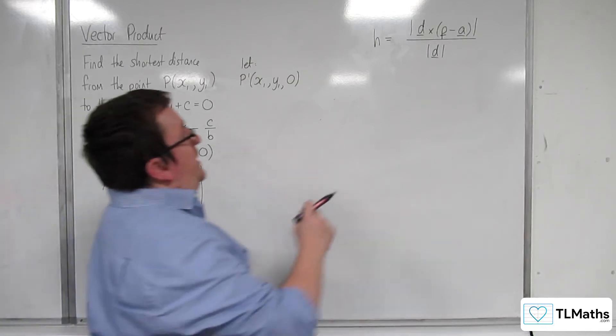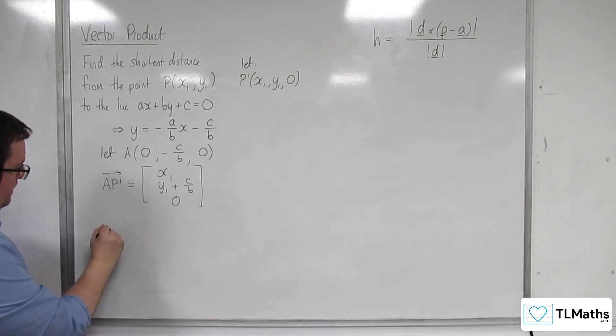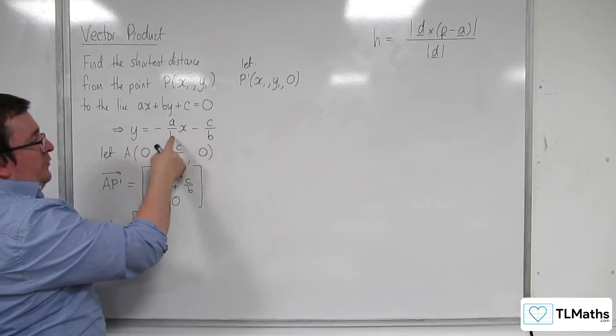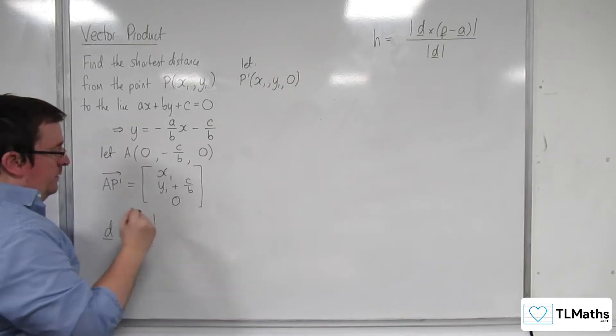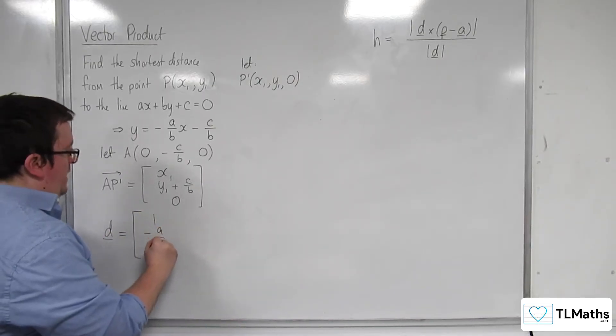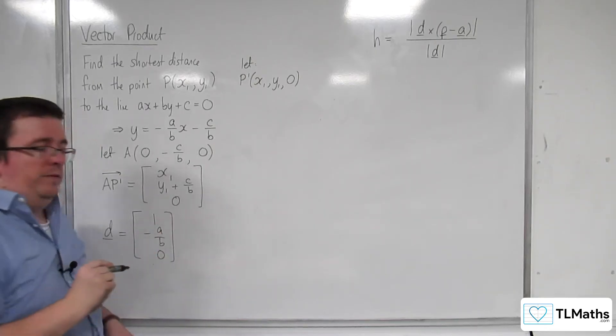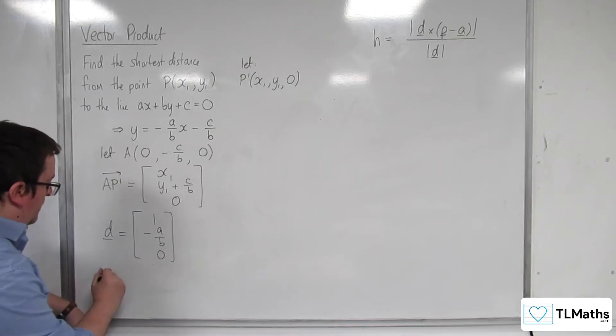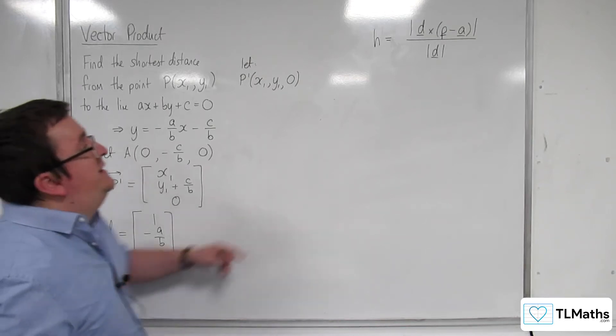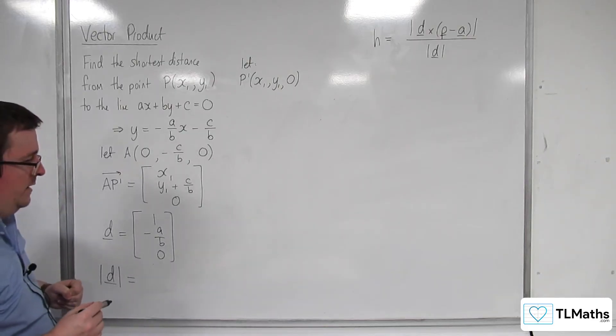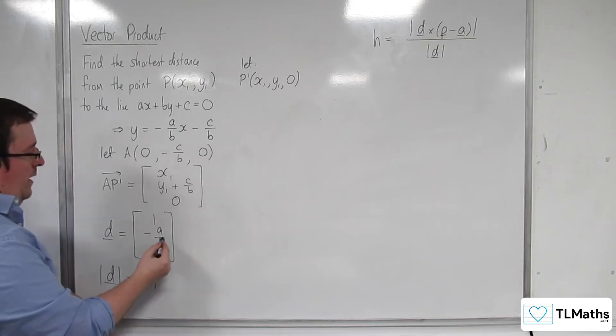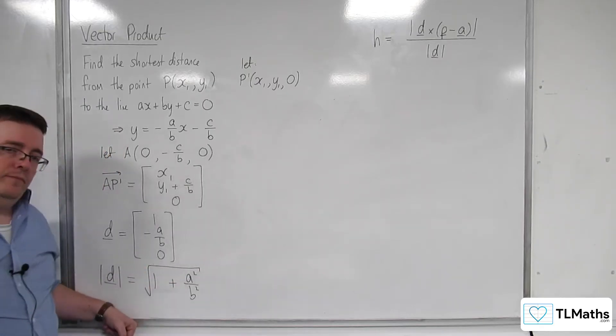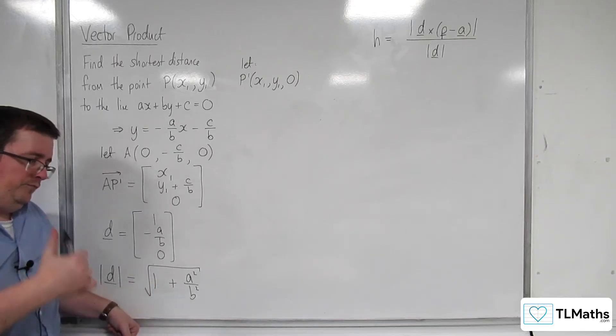Next thing I'm going to need is the direction vector. So, I've got that piece there. I now need d, the direction vector. From the line, because the gradient is minus a over b, that means every 1 along in the x direction, I am going minus a over b in the y direction. And 0, because we're not moving in the z direction. So I now have my d. And while I'm here, I'm going to also find the length of d, because I'm going to need it anyway. So, that's going to be 1 squared plus minus a over b squared, plus a squared over b squared square rooted. So that is the length of this vector here.